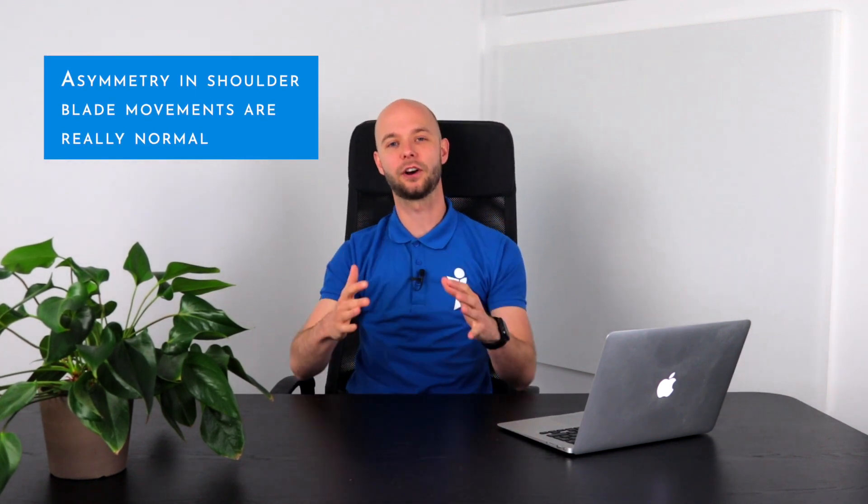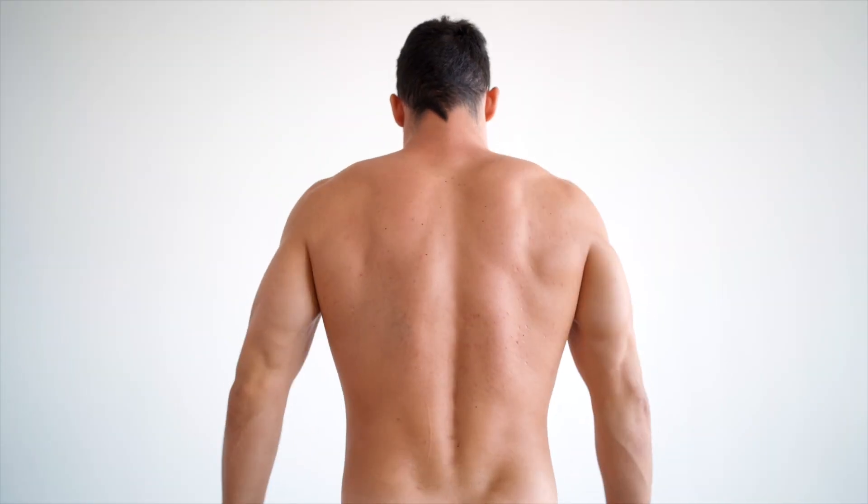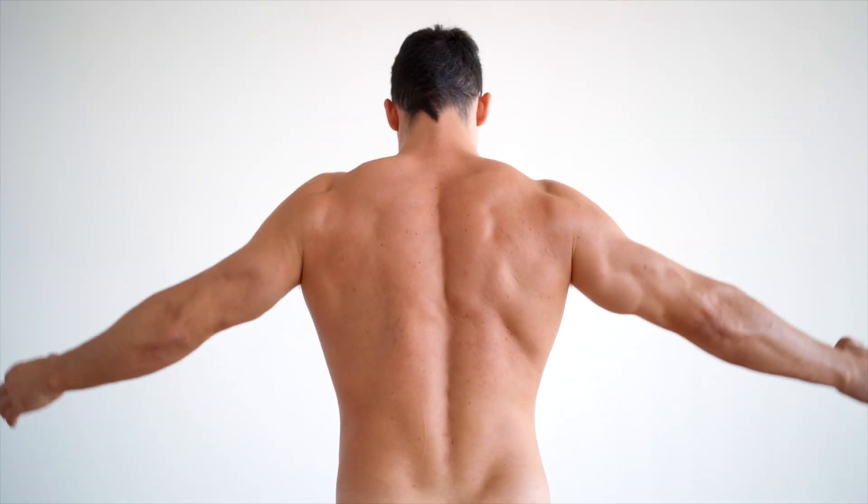Asymmetry and variations of shoulder blade movements are really common and normal. So why should we even take a look at it if it's normal among different people and even normal within the same person?